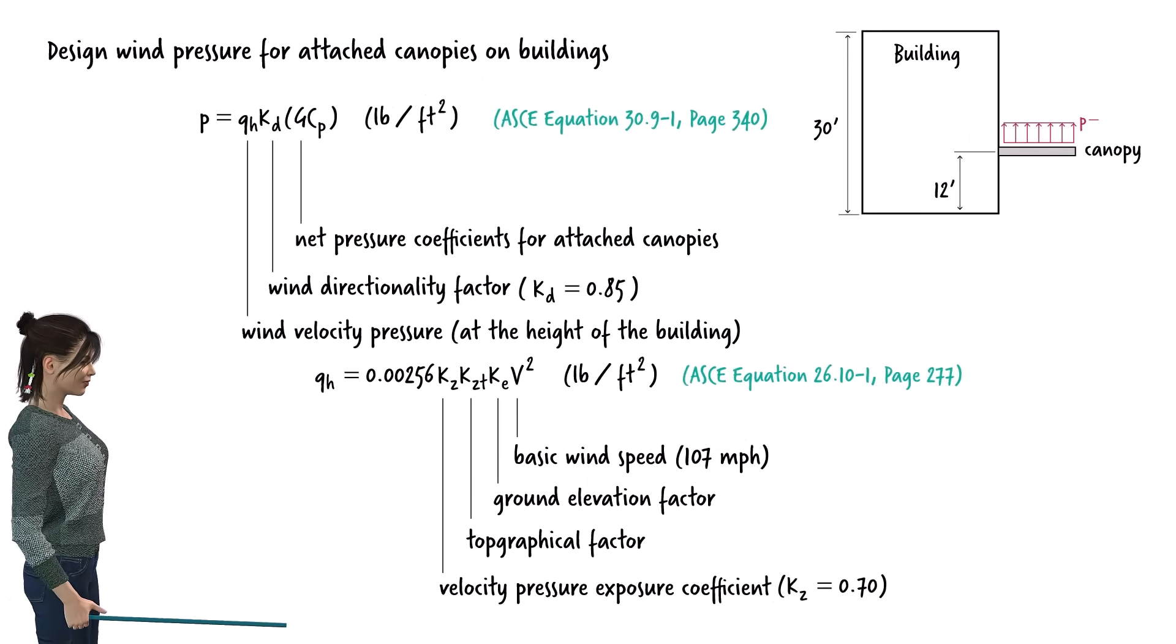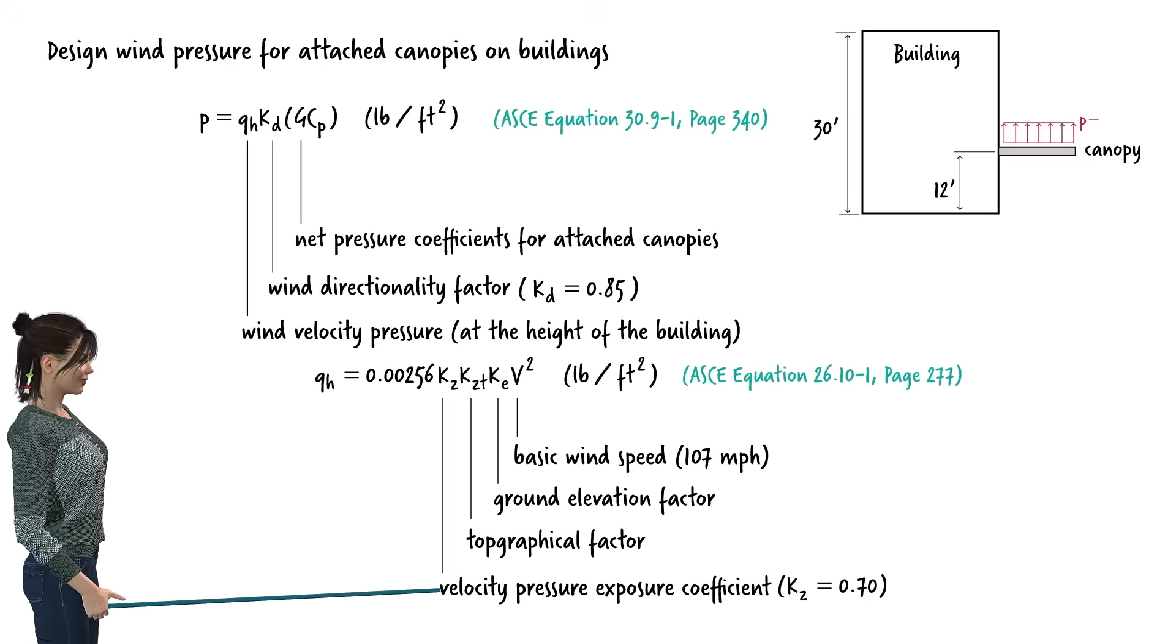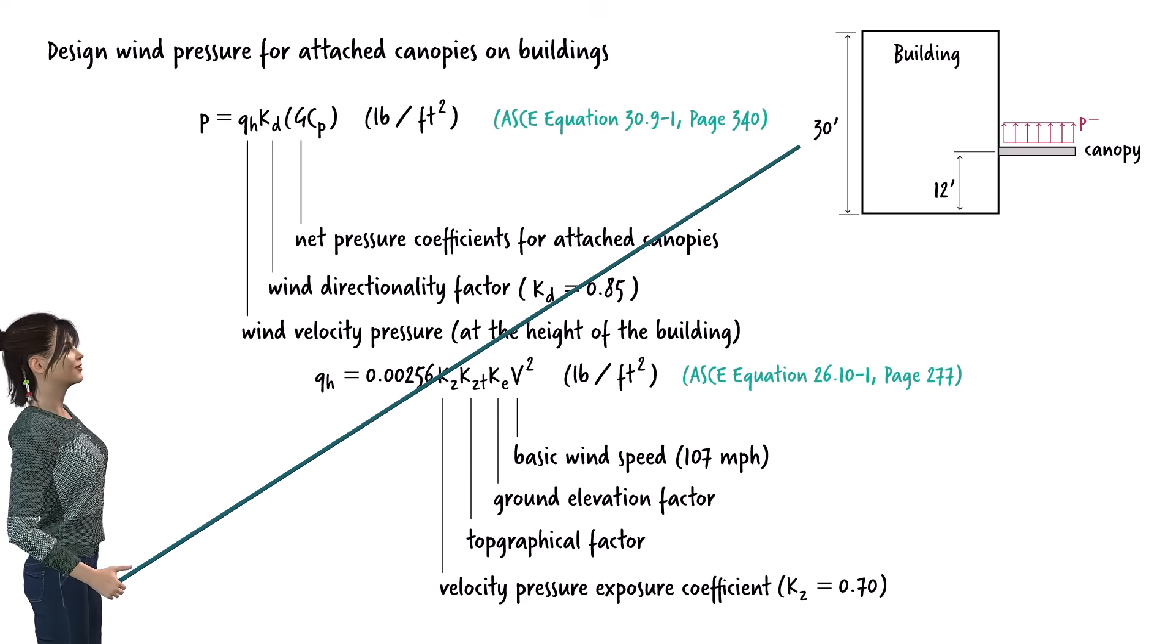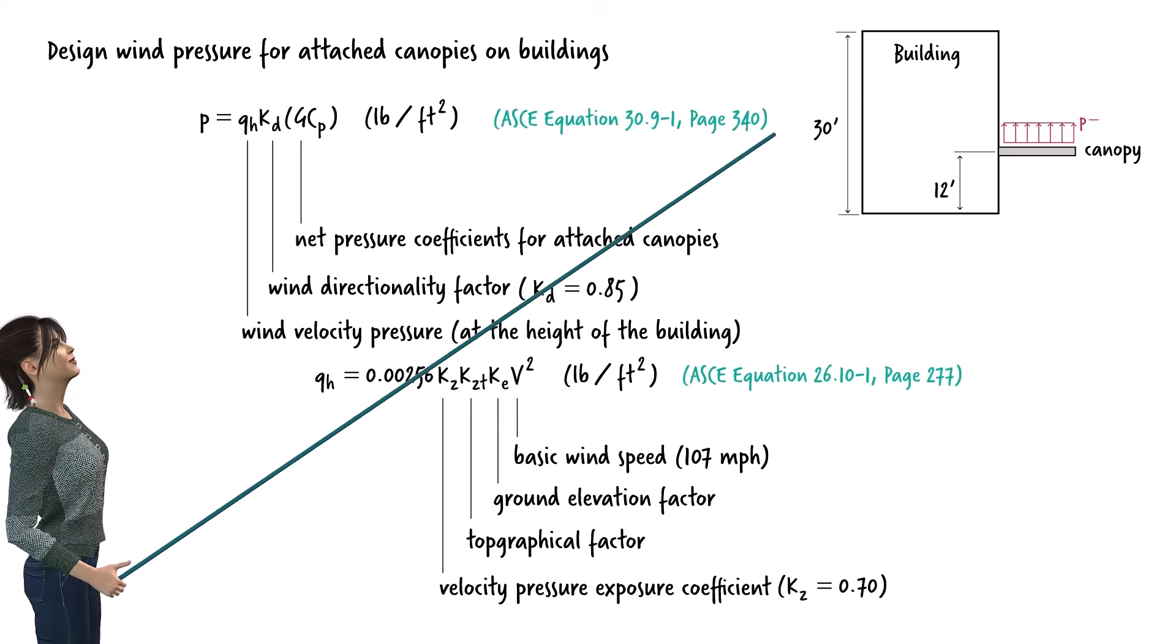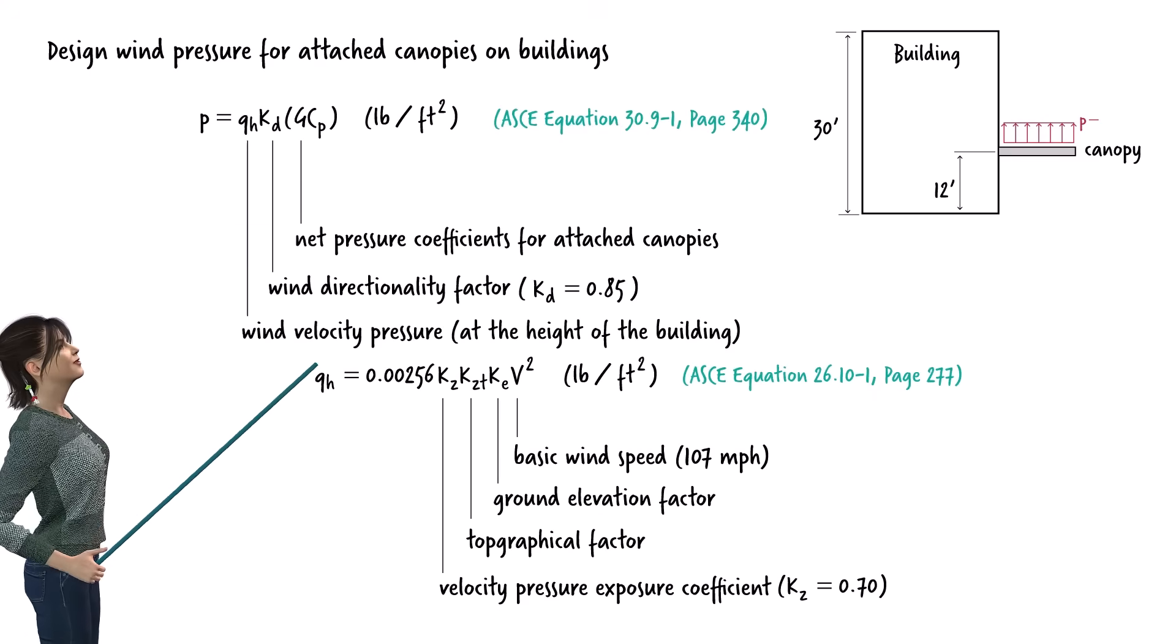Note that we calculated the exposure coefficient, K sub Z, at the building's height, at a height of 30 feet, not at the height of the canopy. We did so because equation 30.9-1 requires the velocity pressure to be determined at the mean height of the roof of the building.